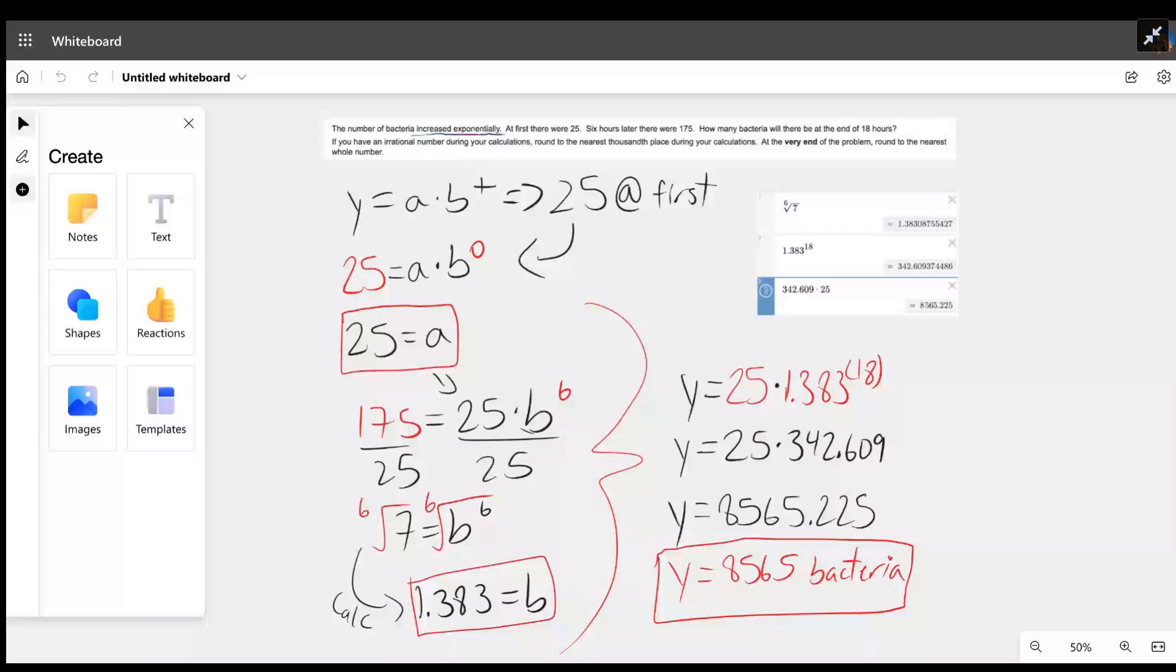We also know that at first there were 25 bacteria. I wrote down here 25 at first, which we can directly translate into the formula. 25 bacteria means y equals a times b to the power of zero. The power of zero is there because the problem says at first. 25 equals a times b to the power of zero, which equals 25 because b to the power of zero is one. A times one is a, so ultimately 25 equals a.